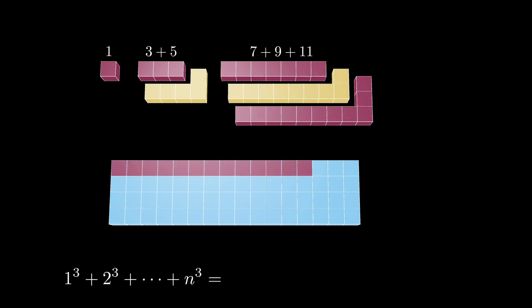The last rectangle can be done so by decomposing it into n times n minus 1 plus 1 plus n times n minus 1 plus 3, and so on, up to n times n minus 1 plus 2n minus 1. But this last number simplifies to n times n plus 1 minus 1.